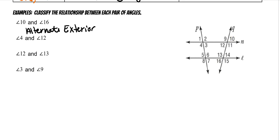The next set is angles four and twelve. Four is here, twelve is here. Now this is the transversal — it's sideways. They are both on the same side and they're skipping over angle three. Same side skip is corresponding angles.